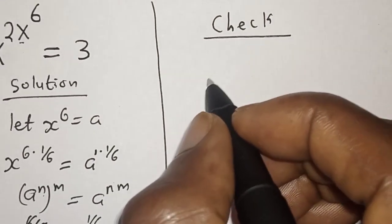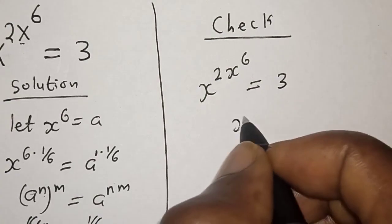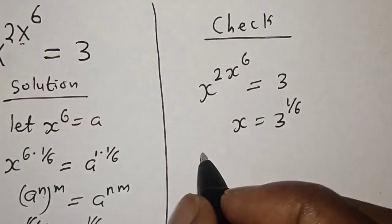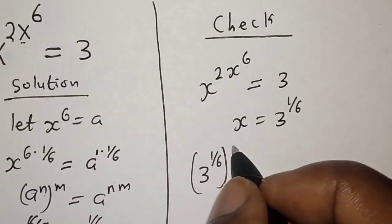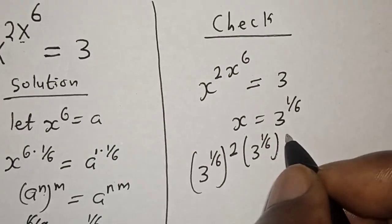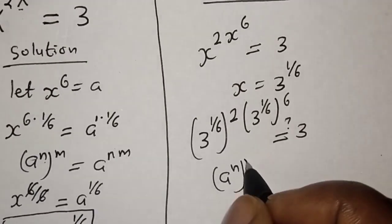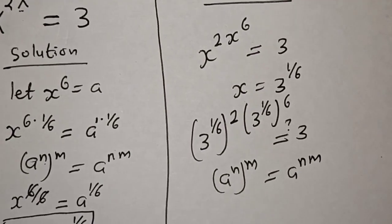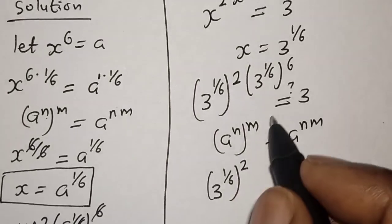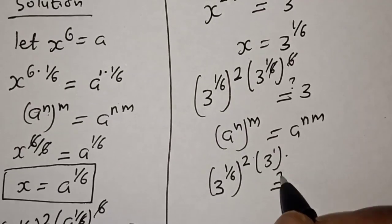Let's check to confirm our answer. We have the given equation: s raised to power 2 times s raised to power 6 is equal to 3. Substituting s equal to 3 raised to power 1 over 6, this becomes 3 raised to power 1 over 6, raised to power 2, multiplied by 3 raised to power 1 over 6, raised to power 6, must equal 3. Applying the rule that a raised to power n to the power of m equals a raised to power n times m, we have 3 raised to power 1 over 6 raised to power 2, which must equal 3.